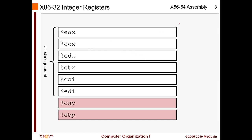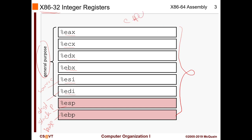This is the 32-bit x86 version. We have six general purpose registers: EAX, ECX, EDX, and EBX, plus ESI and EDI. ESI means source index and EDI means destination index. ESP is the stack pointer and EBP is the base pointer. These are registers — they are not part of RAM, they are part of your CPU.